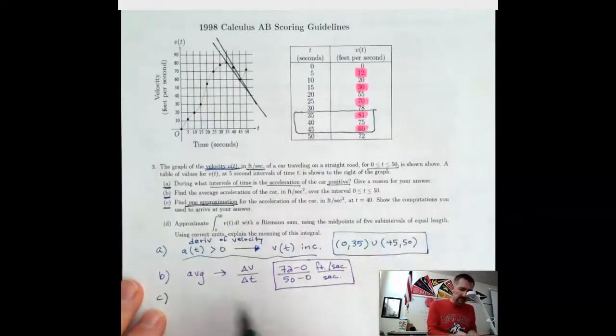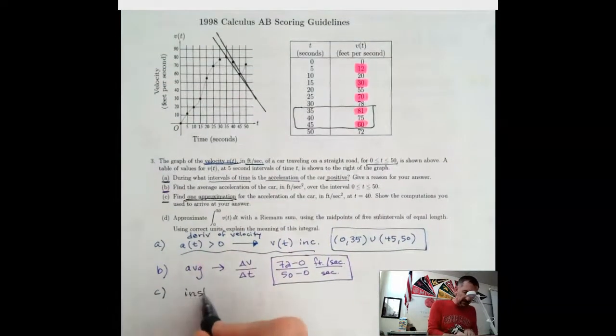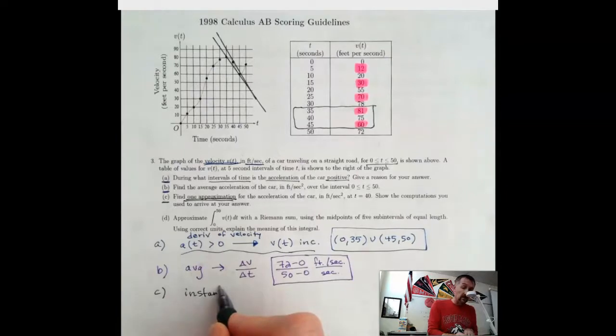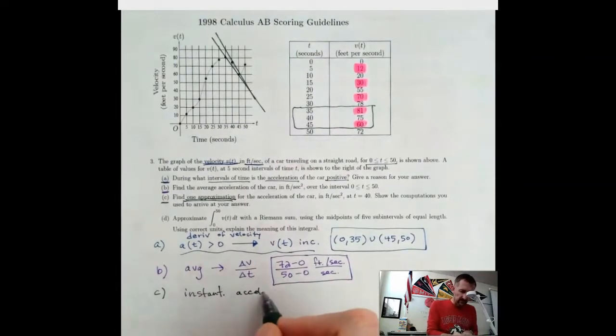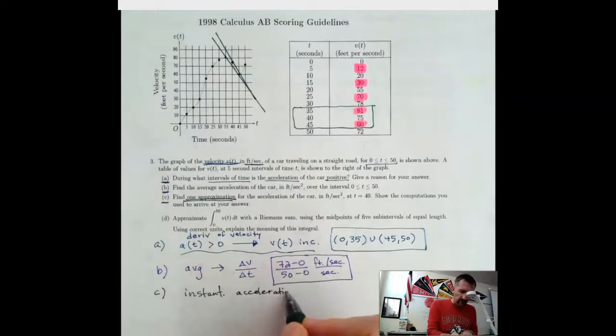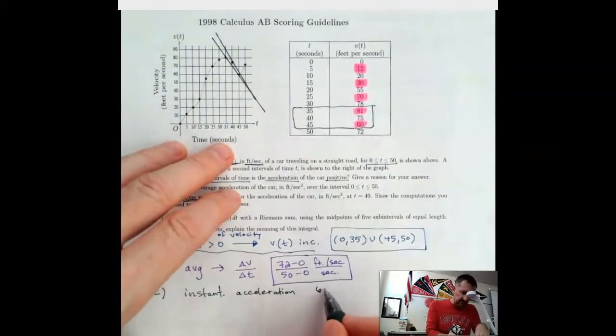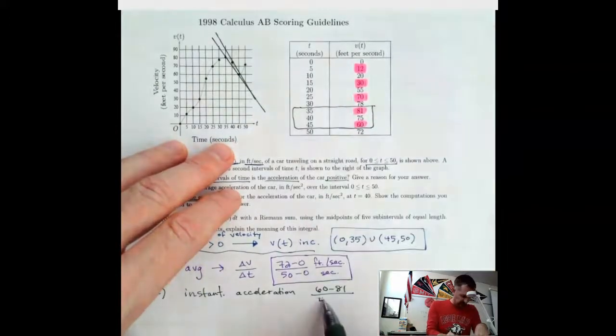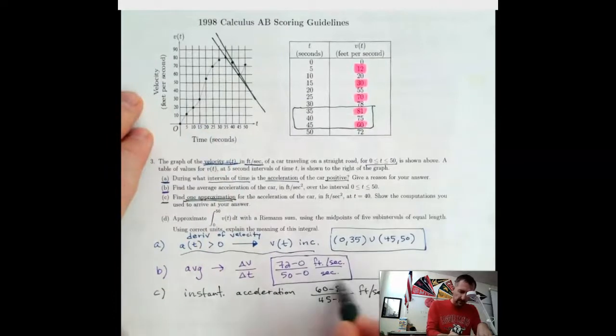And I'm going to calculate the slope using those two points on either side of 40. So the instantaneous acceleration is the derivative, and we can approximate that with that secant line. So that's going to be 60 minus 81 over 45 minus 35. And that's still an acceleration, so that's going to be feet per second squared.